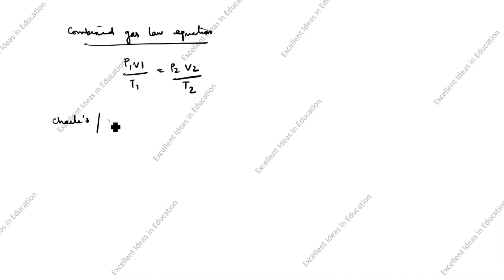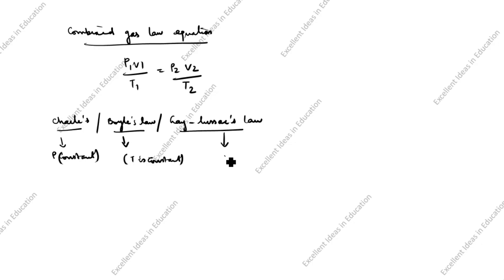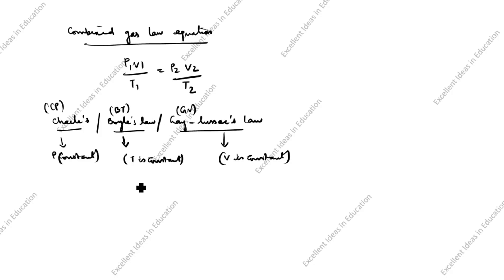From the combined gas law, we get Charles' law, Boyle's law, and Gay-Lussac's law. Charles' law: P is constant. Boyle's law: T is constant. Gay-Lussac's law: V is constant. Short forms to remember: CP for Charles' law (P constant), BT for Boyle's law (T constant), and GV for Gay-Lussac's law (V constant).